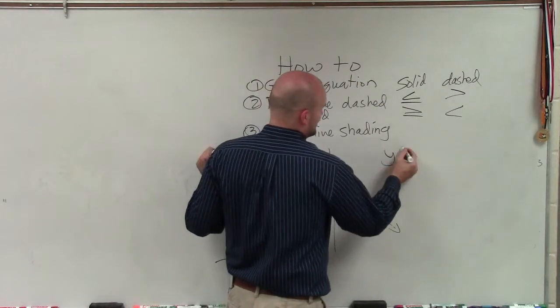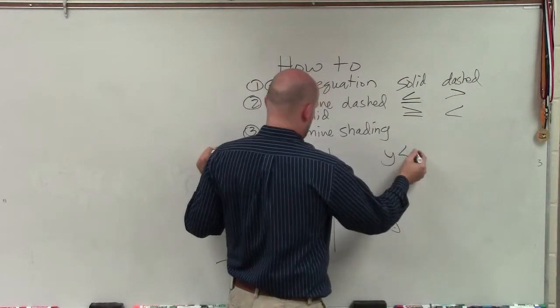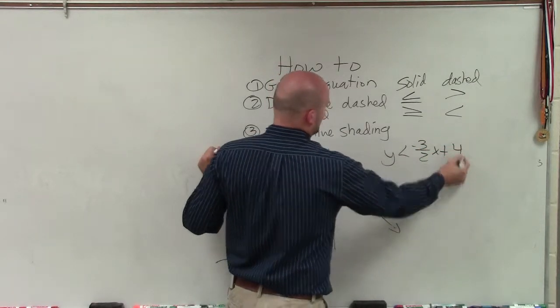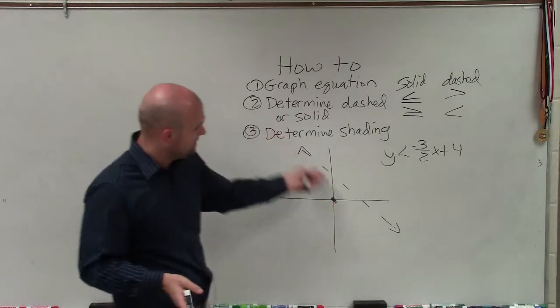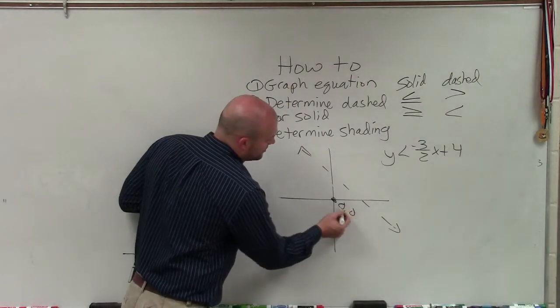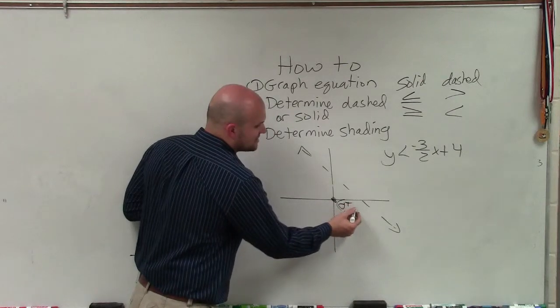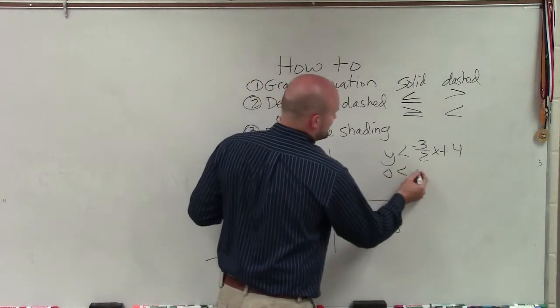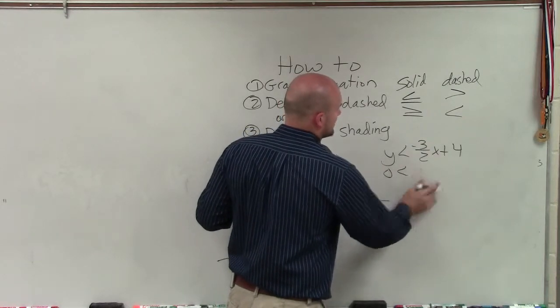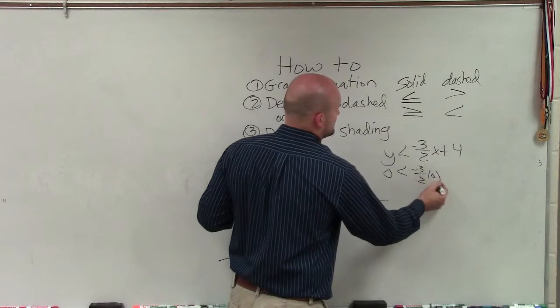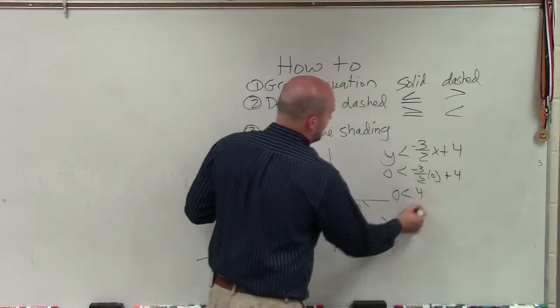Let me just make up an equation. Let's do y is less than negative 3 halves x plus 4. Let's pretend that was our inequality that made that graph. If I wanted to test (0, 0), what I would simply do is plug in 0 for x and 0 for y. So 0 is less than negative 3 halves times 0 plus 4. So 0 is less than 4.